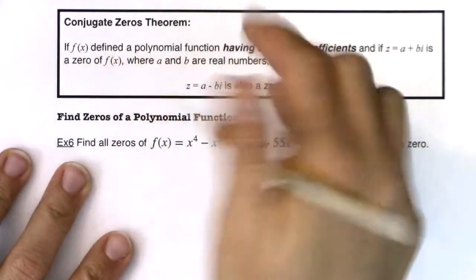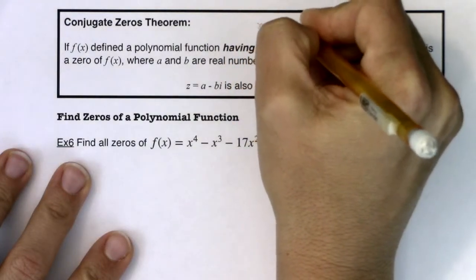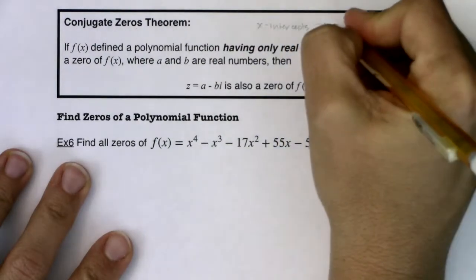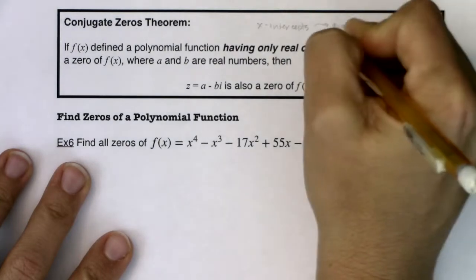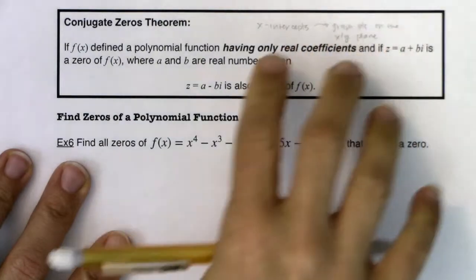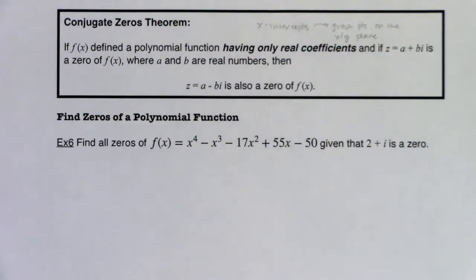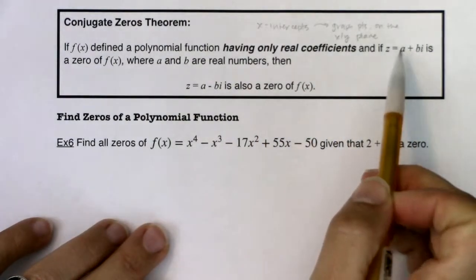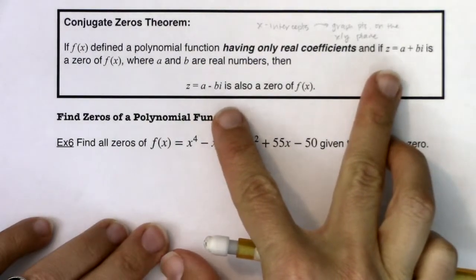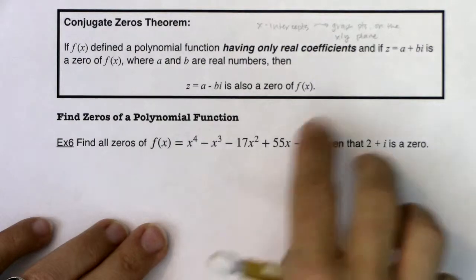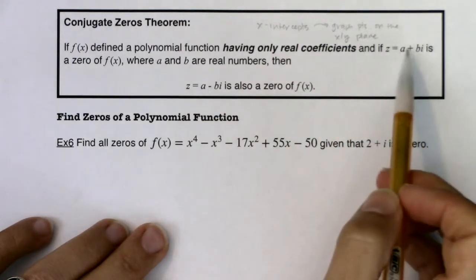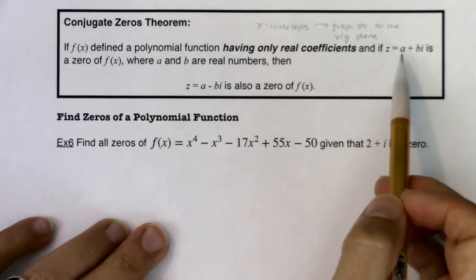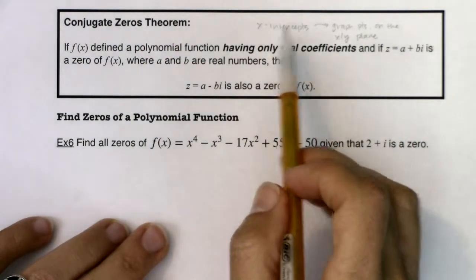When we talk about x-intercepts, this means I can graph these points on the x-y plane — on the x-y or Cartesian coordinate system — just like we always have been. You have to have an x and a y coordinate. But we're going to branch into complex zeros, and here's where I'll start to really make the distinction: these are zeros and not x-intercepts. These values will zero out our function, but we can't graph them because they're imaginary. That's why I won't call them an x-intercept.